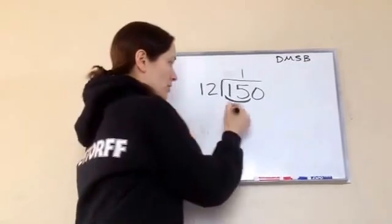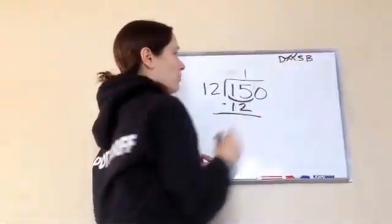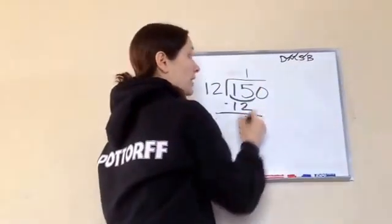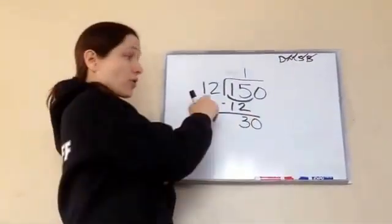12 times 1 is 12. We subtract, we divide and multiply, 3. We subtract 3 and bring down 0. Now this is our new number, 30.